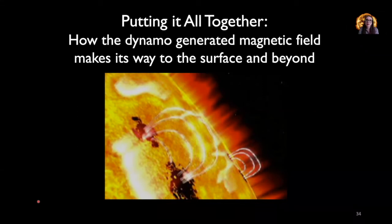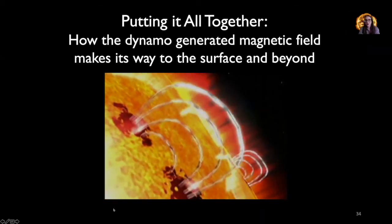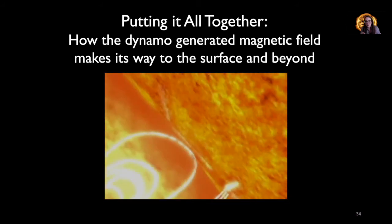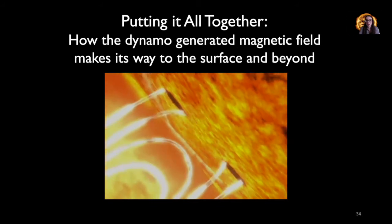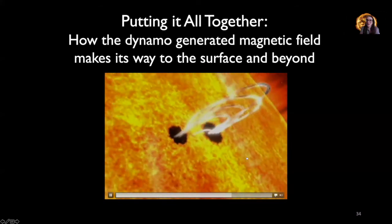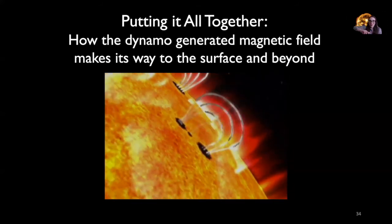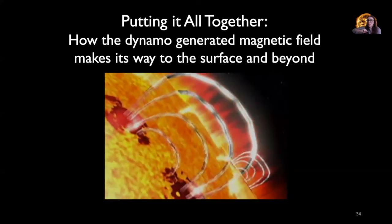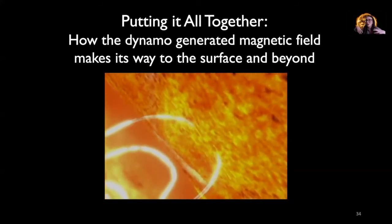How the dynamo-generated field makes its way to the surface and beyond is shown in this graphic. So we've got that rope of magnetism created by the dynamo, rising through the convection zone inside the sun, intersecting with the photosphere to form our sunspot pairs. You've got this loop of magnetism like the magnetic field from a bar or horseshoe magnet, and that magnetic field is like a rubber band — it can snap, twist, and break off. Whenever it does that, it releases a lot of energy, spewing out a tangled cloud of magnetic field and charged particles with a lot of energy.